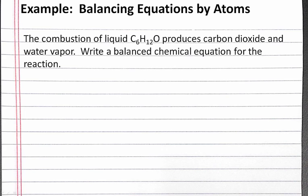In this example problem, we'll balance a reaction for a chemical equation by balancing the atoms of each element on both sides. Our problem reads: the combustion of liquid C6H12O produces carbon dioxide and water vapor. Write a balanced chemical equation for the reaction.